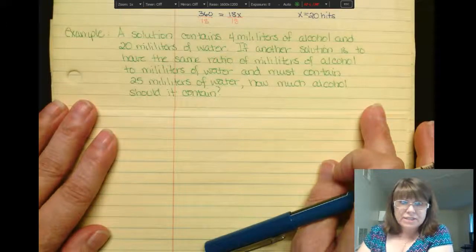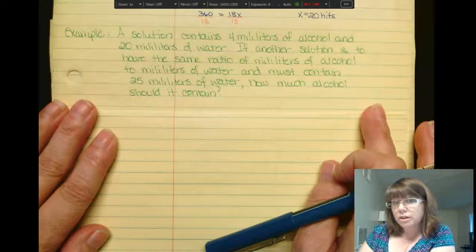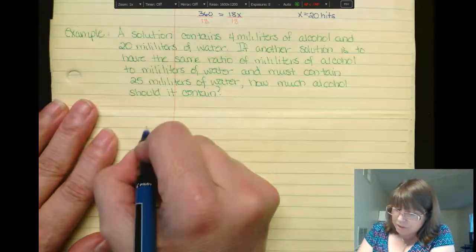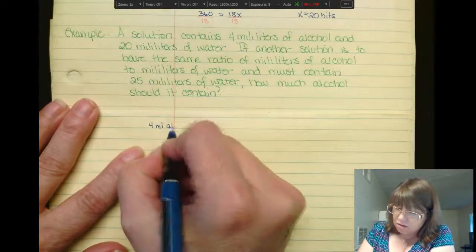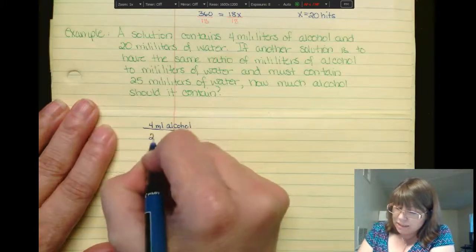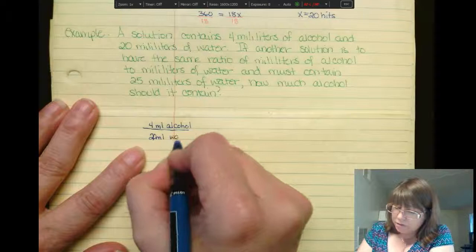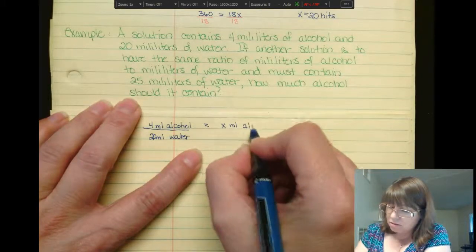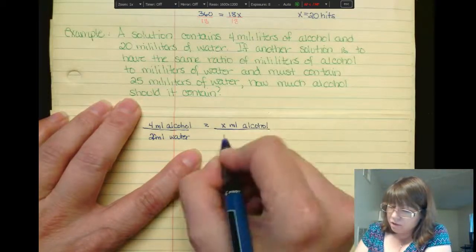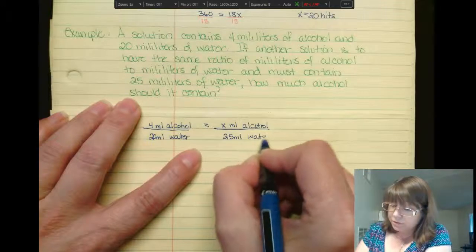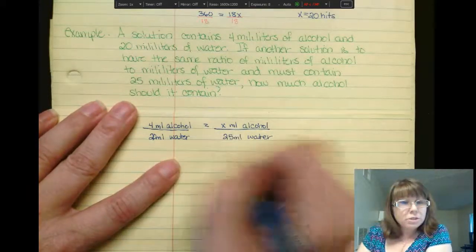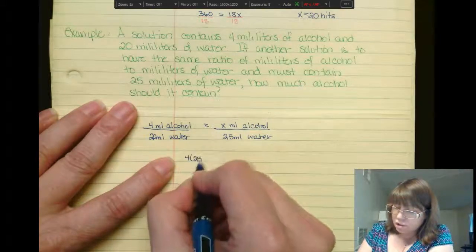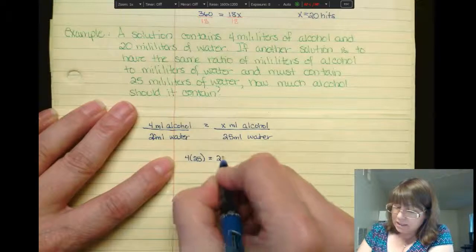So we have a solution that contains 4 milliliters of alcohol and 20 milliliters of water. If we need another solution that's to have the same ratio of milliliters of alcohol to milliliters of water, but it must contain 25 milliliters of water, how much alcohol should it contain? So I'm going to set this up of 4 milliliters of alcohol to 20 milliliters of water. And I need to know how many milliliters of alcohol will I need for 25 milliliters of water.